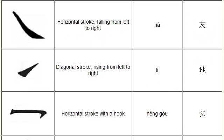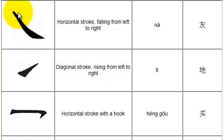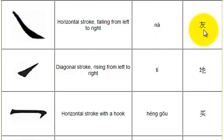Next is na. Na is a stroke drawn falling from the top left down to the right. Start at the top left and draw down towards the right. You can see an example of na being used in the lower right-hand corner of this character.